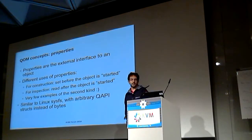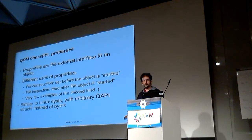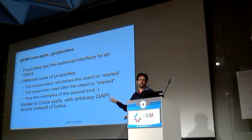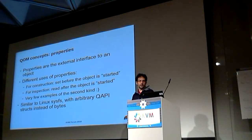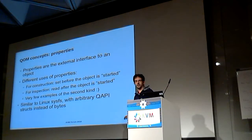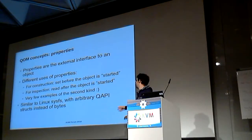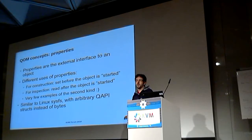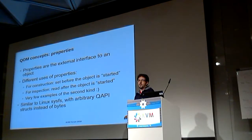Properties are the external interfaces of an object. They can be used to teach an object how it will behave — like before the object is started or activated, you set these properties. You can also have properties for inspection that are read after the object is started. There are some very rare cases where you have properties written at any point during the lifetime of an object by the management interface — something written from the outside while the VM runs. Almost all usage of properties is really limited to teaching an object what to do: how big memory will be, what file to read the random numbers from, and so on.